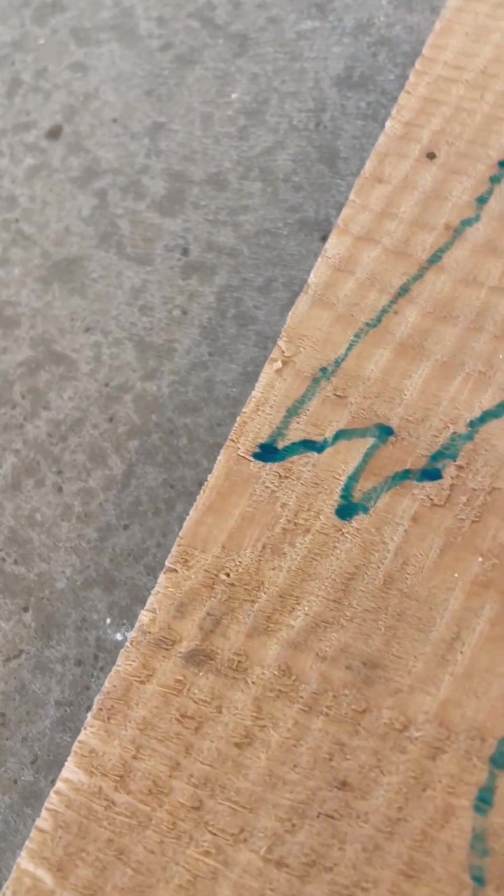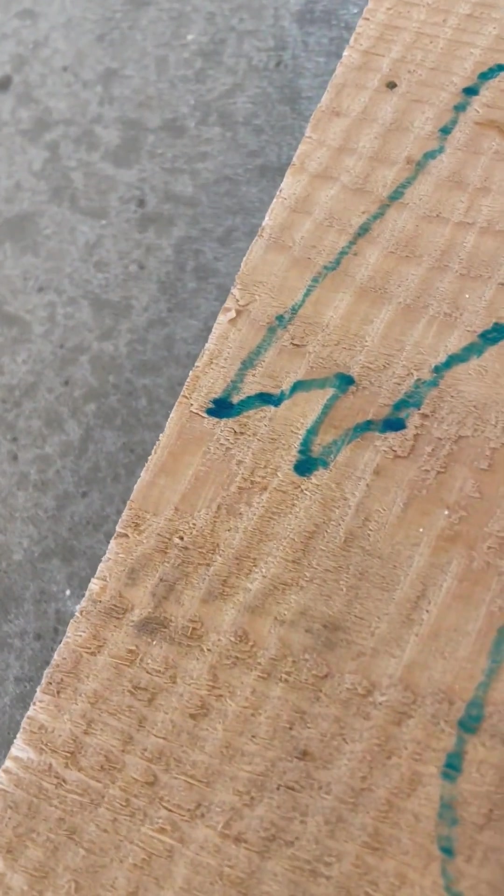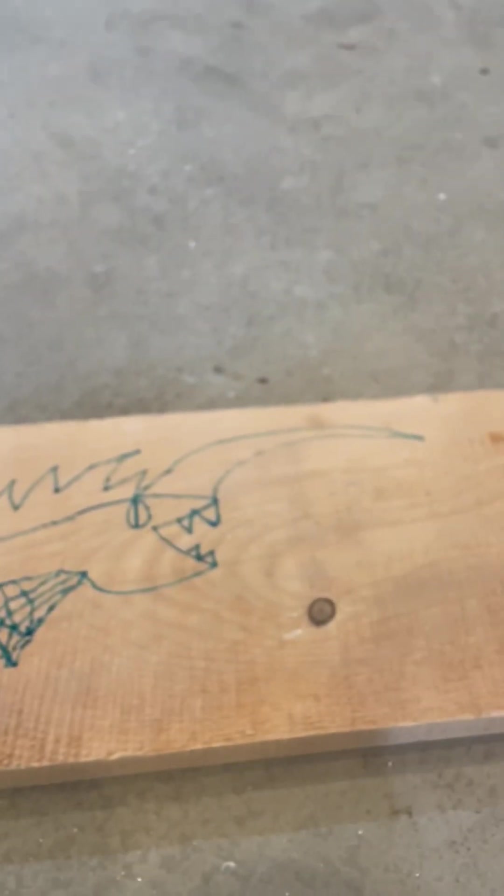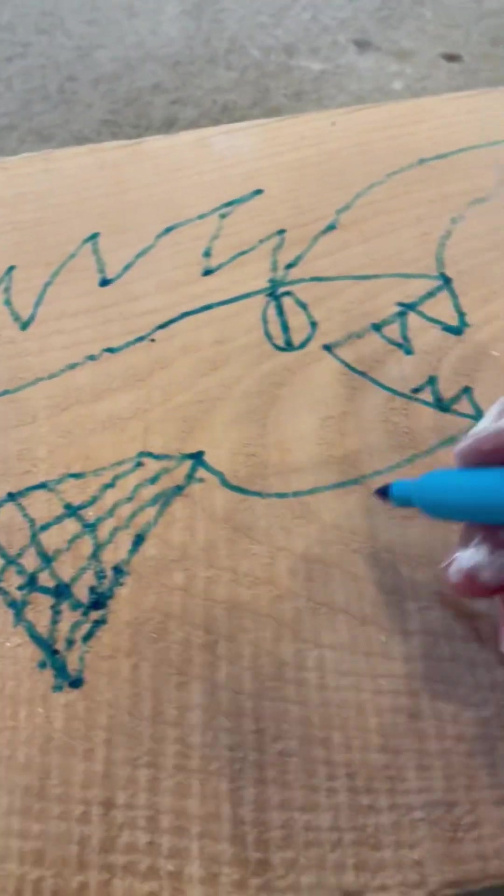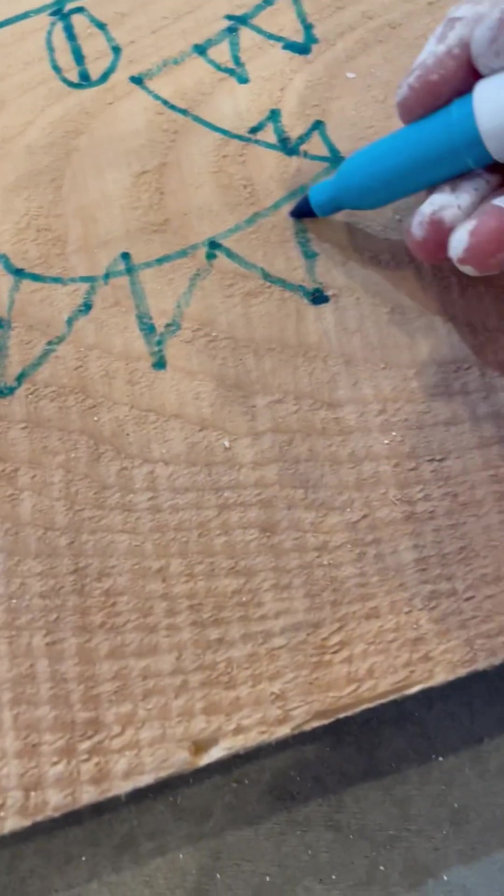So now what we're going to do is I'm going to add some more spikes to it. Okay, this dragon is going to be kind of weird. And then like he has a mane we're going to put spikes where a mane is going to go.